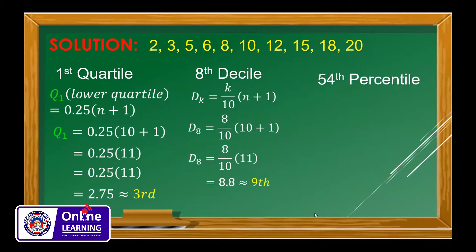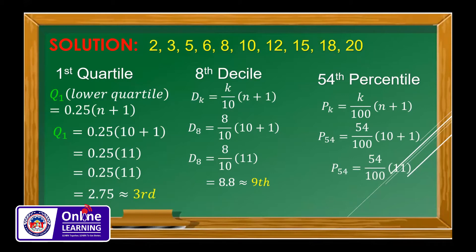For the 54th percentile, we use P sub k = (k/100) × (n + 1). Here k = 54 and n = 10, so (54/100) × 11 = 5.94. Rounding up gives us the 6th position. The 6th value in our data is 10, so the 54th percentile equals 10. Those are the steps to find percentile, decile, and quartile for ungrouped data.